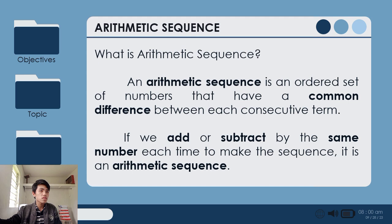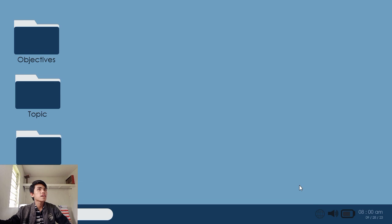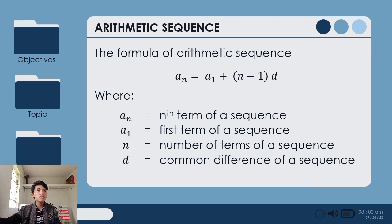So a sub 1 is for first term, a sub n is for the last term. If we add or subtract by the same number each time to make the sequence, it is an arithmetic sequence. So let's proceed. The formula of arithmetic sequence is a sub n equals a sub 1 plus quantity of n minus 1 times d, where a sub n is the nth term of a sequence, the last term ng ating sequence. a sub 1 is the first term ng ating sequence. n is the number of terms of our sequence, and d is the common difference of our sequence.